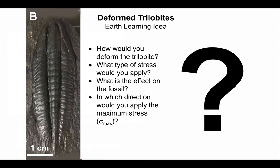If we look at fossil B, this again is the same type of trilobite, but this one looks different. So how would you deform this trilobite? What type of stress could be applied to this one to deform it in this way? What effect does that actually have on the fossil, and which direction is the maximum stress — sigma max — actually working in?